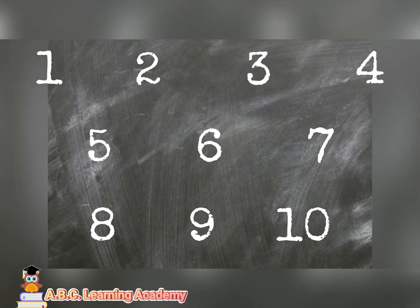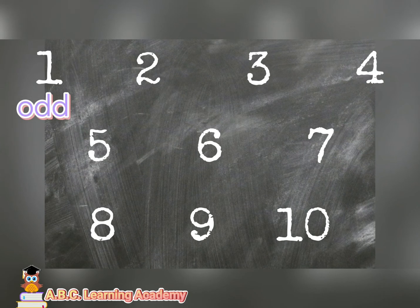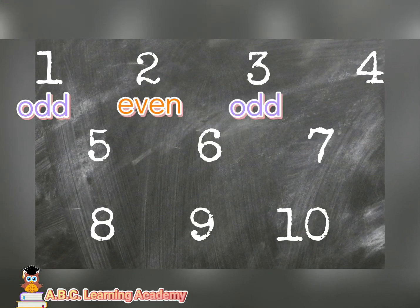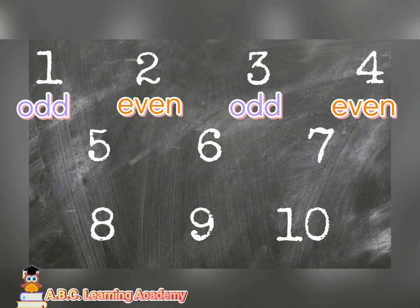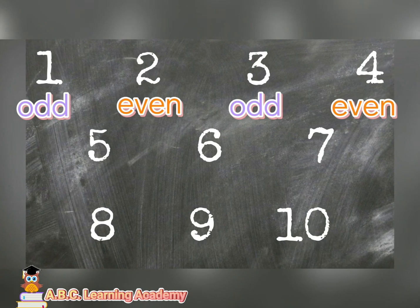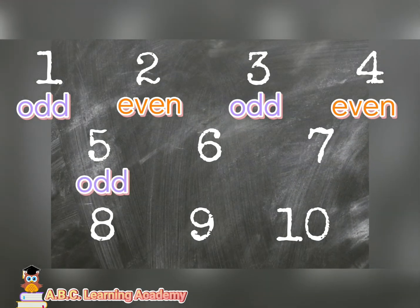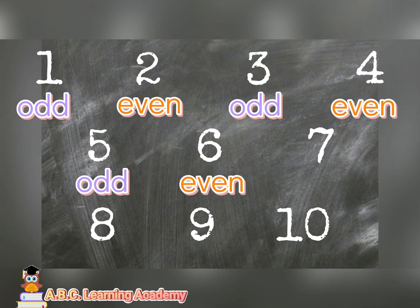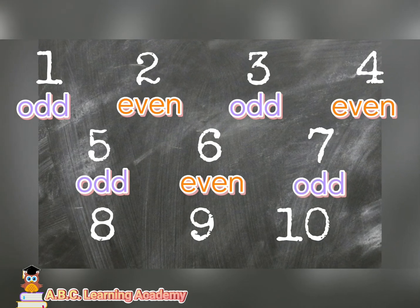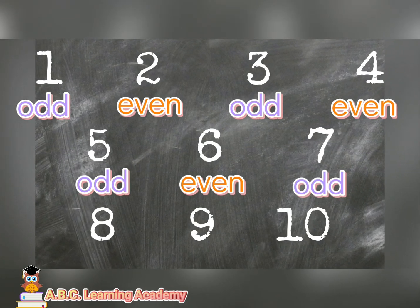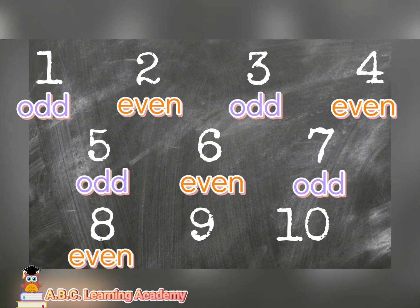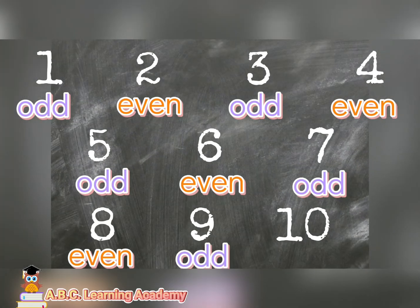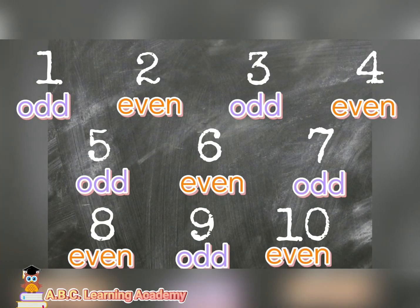Let us have a recap. One is odd. Two is even. Three is odd. Four is even. Five is odd. Six is even. Number seven is odd. Eight is even. Nine is odd. And ten is even.